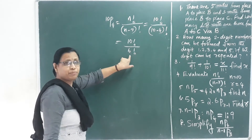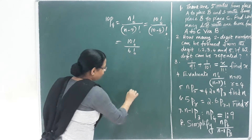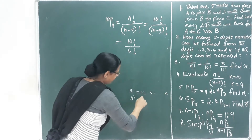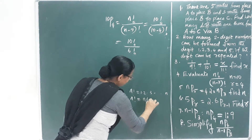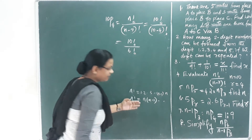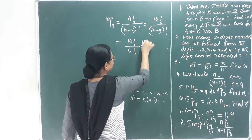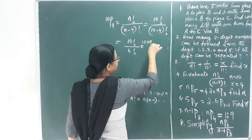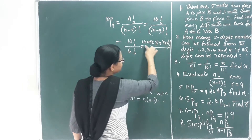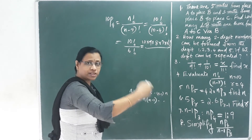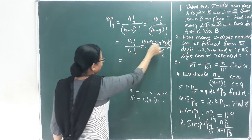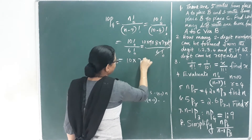So how do we simplify this? n factorial is 1 × 2 × 3 up to n. So 10 factorial is 10 × 9 × 8 × 7 × 6 factorial. The 6 factorial cancels out.